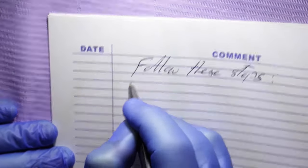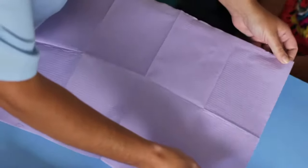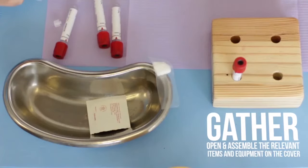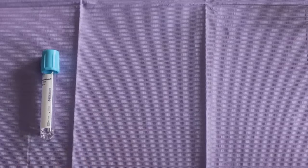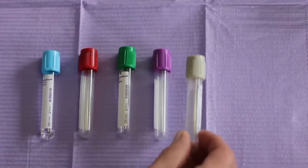Now, follow these steps. Start by opening a clean work surface cover, then gather, open, and assemble the relevant items and equipment on the cover. Set out all the tubes you will need by the order of the draw.